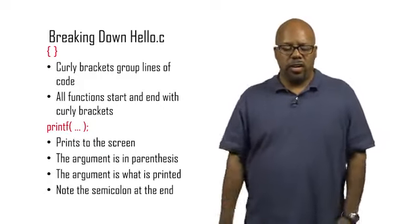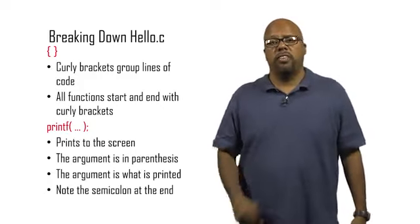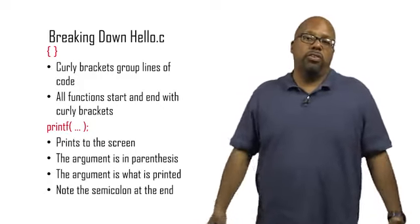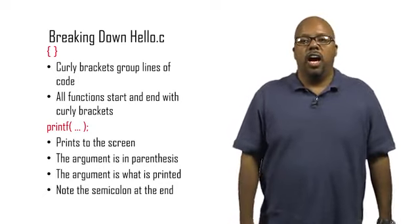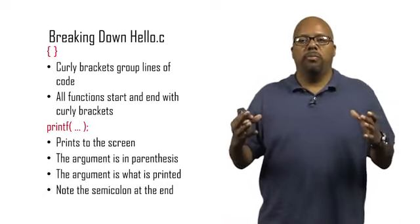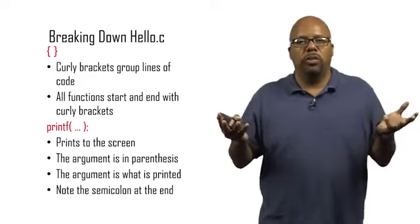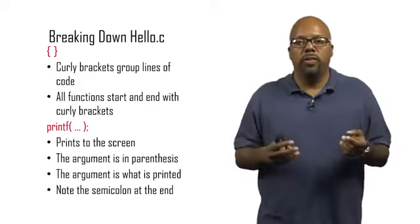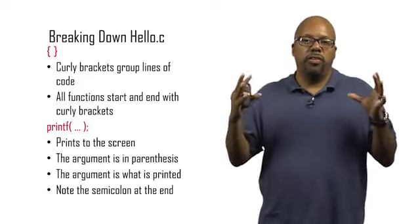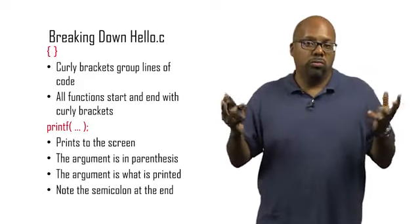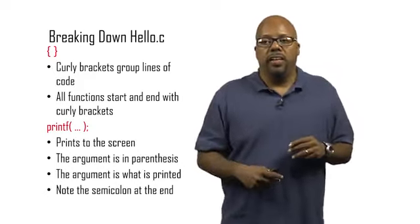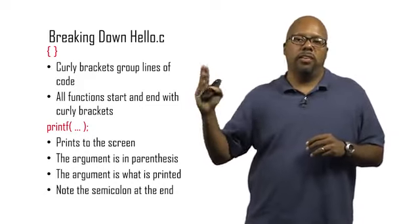Now, inside our function, our main function, we have a printf, print statement. And that just basically prints to the screen by default. Inside the parentheses, you put in quotes whatever you want to print. So in our case, we want to print the phrase hello world. So you say printf, and then in parentheses, you have quotes, hello world, closed quotes. And there's a semicolon at the end of the print statement, after the print statement.